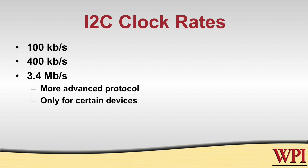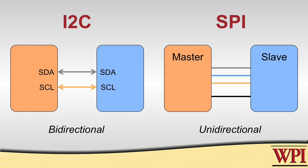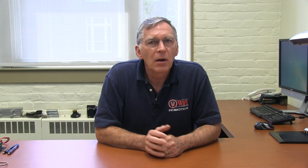For most devices you tend to be limited to the 100 and 400 kilobits per second speeds. One of the differences between I2C and SPI has to do with the direction of the data lines. In I2C, the SDA and SCL lines are both bidirectional. In the SPI protocol, every line is unidirectional — MISO goes from slave to master, MOSI goes from master to slave. But in I2C, the data on either of the two wires can flow in both directions. So all in all, the I2C protocol is much more sophisticated than SPI.